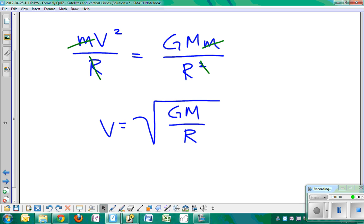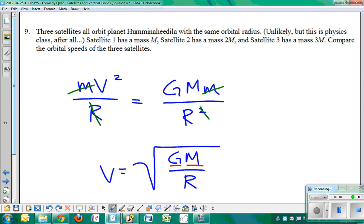where G is the universal gravitational constant, M is the mass of the thing that's being orbited, planet Hamanhidala.